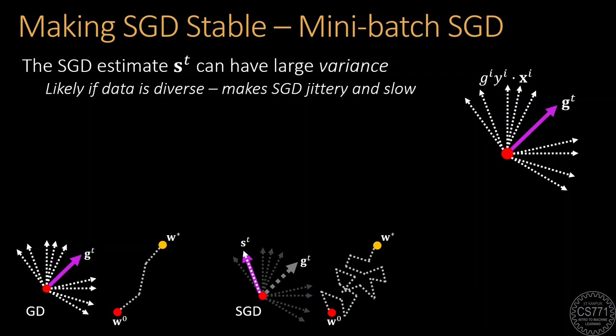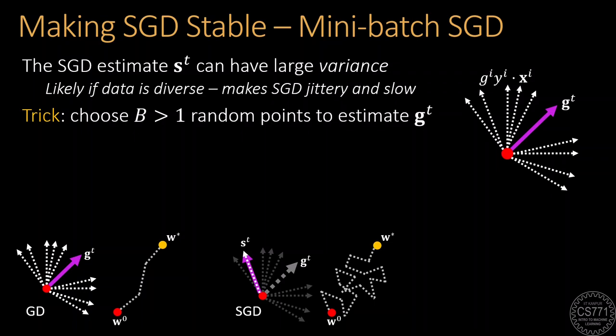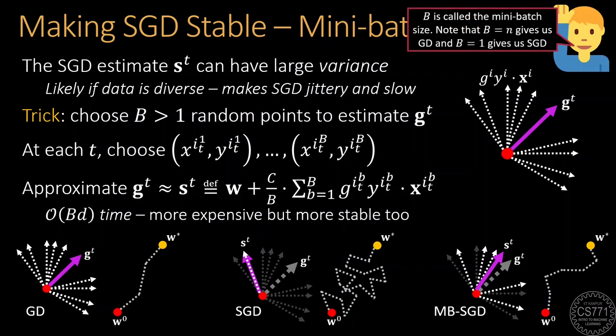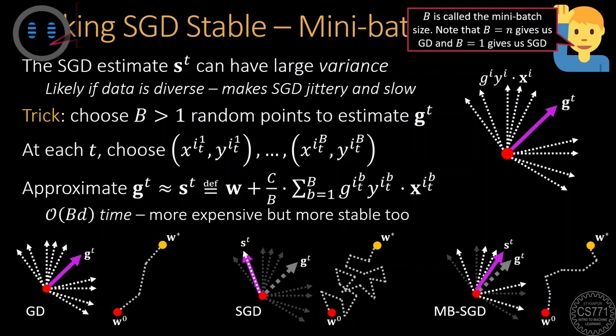A simple way to solve this issue is to get a descent direction by choosing more than one, let's say B data points in each iteration. Sure, each iteration will be a bit more expensive, but as this cartoon shows, this descent direction may be a much better approximation to the actual sub-gradient and give far more stable progress. Due to these attractive features, mini-batch gradient descent is a core component of modern deep learning libraries.